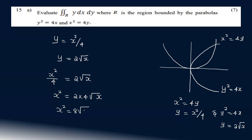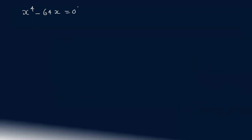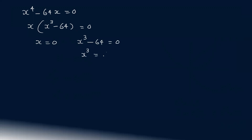Squaring both sides: x⁴ = 64x, so x⁴ - 64x = 0. That is, x(x³ - 64) = 0, giving x = 0 and x³ = 64, so x = 4.